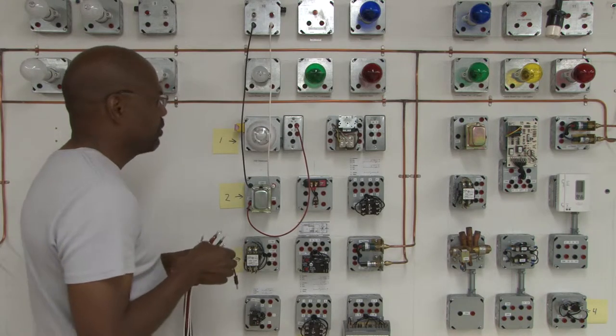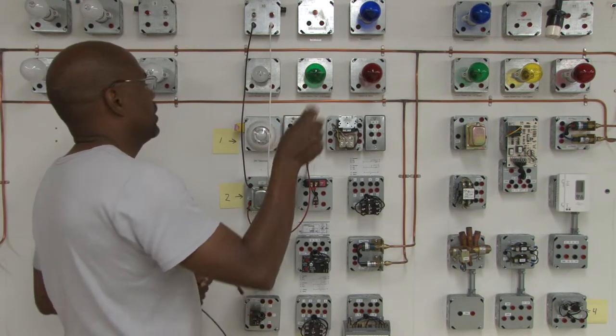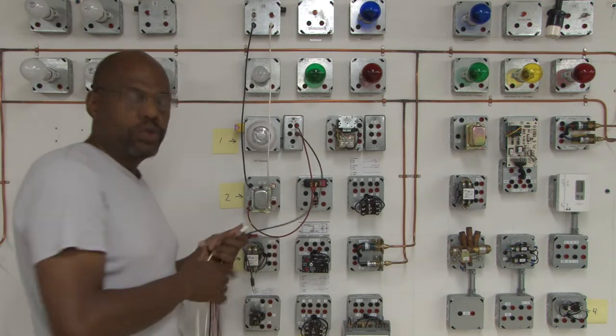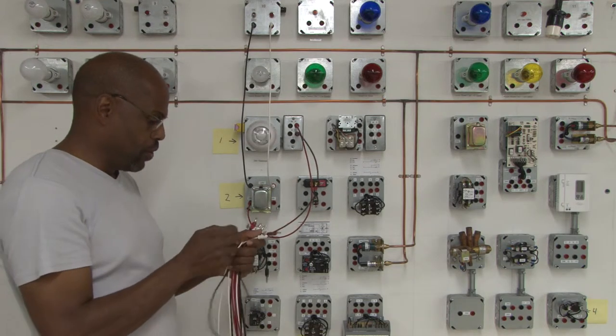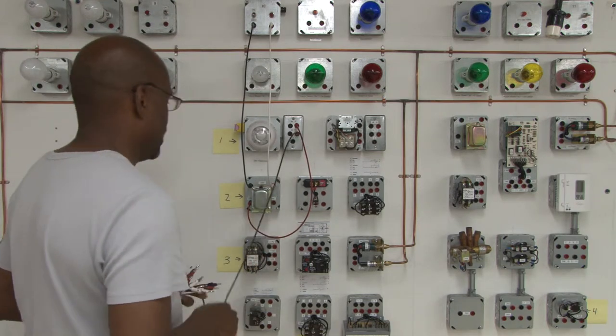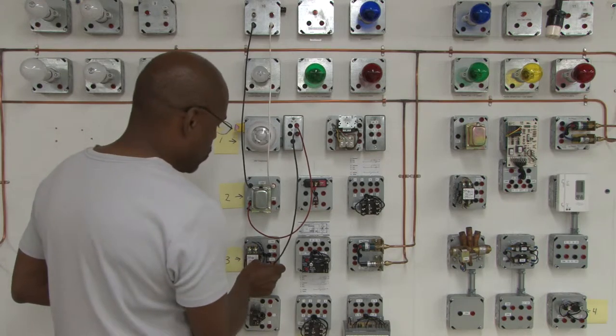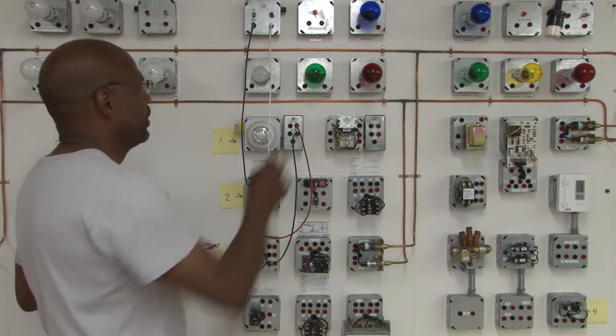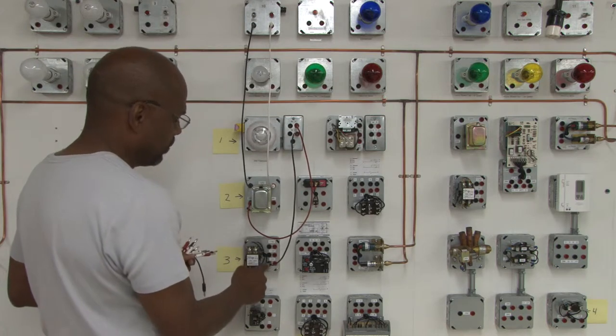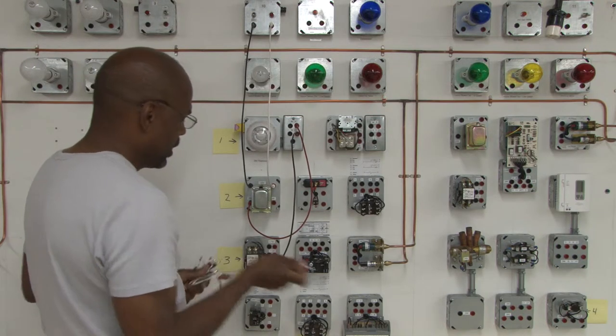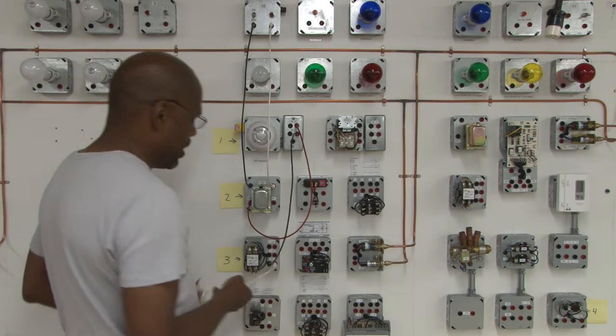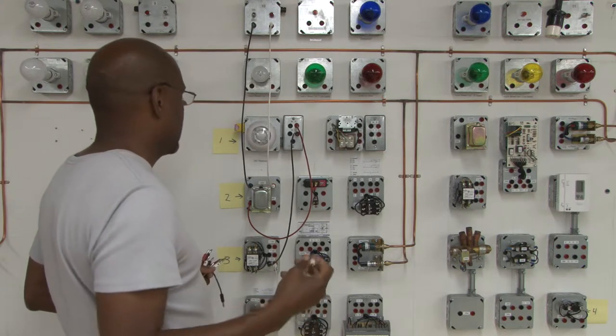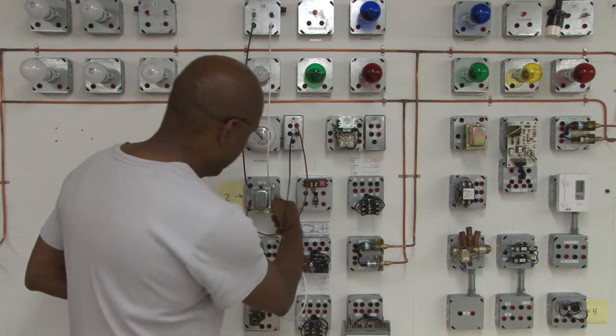We're going to come out of the thermostat and use Y. The terminal Y is used for air conditioning. So we're going to go to our coil of our contactor from Y terminal which is outlet and it goes to that side. Coming out the other side of the coil we're going to go back to the 24 volt side.